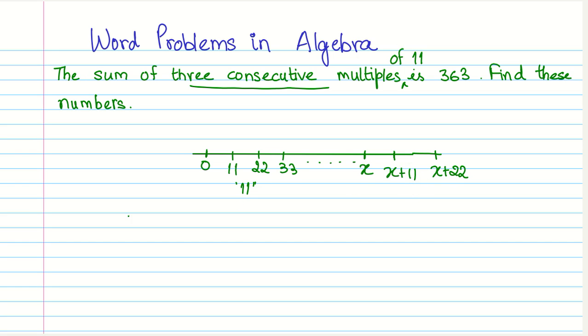So we already got three multiples. And this simplifies our forming the algebraic equation. So we are given that X plus, so that is the first multiple, then X plus 11 is the second multiple, and X plus 22 is the third multiple, that equals to 363.